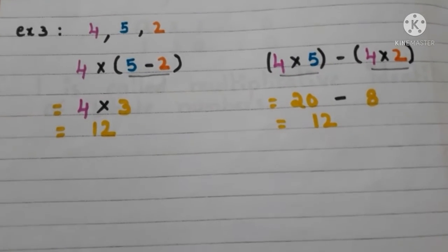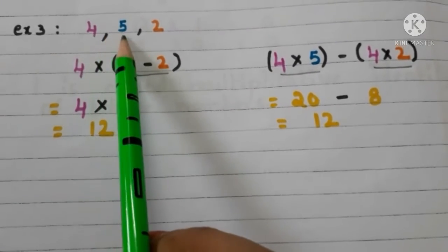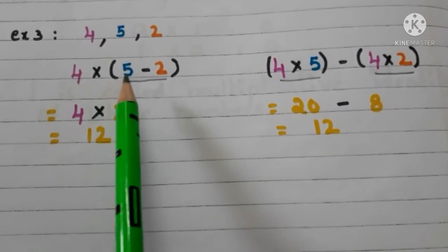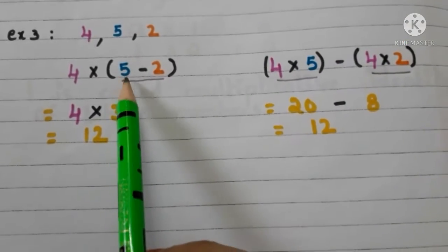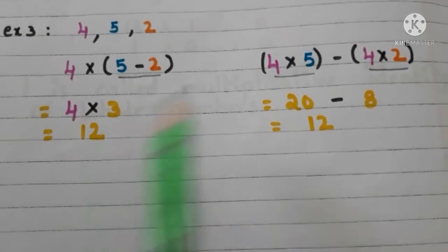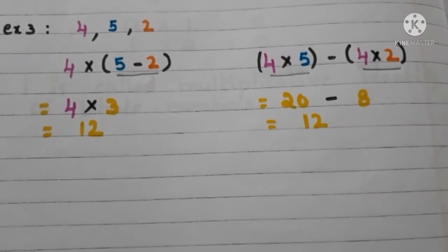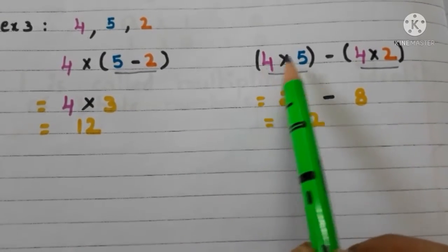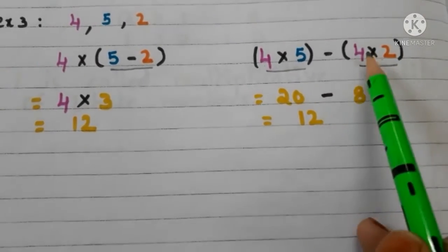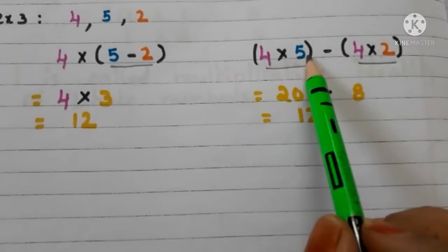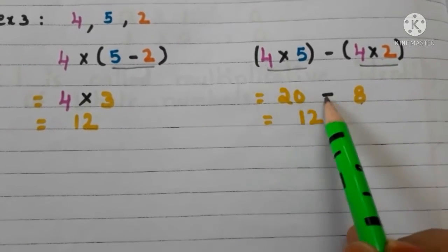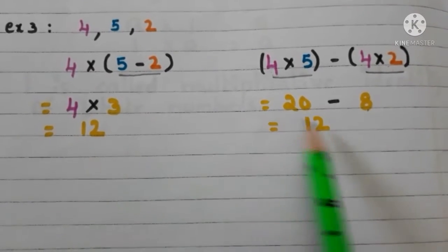Let us see another type of example. Take 3 whole numbers 4, 5 and 2. First, we take the product of 4 and difference of 5 and 2. 5 minus 2 is 3. Now, multiply with 4: 4 times 3 are 12. Now, let us solve this in another way. First, take the product of 4 and 5, then take the product of 4 and 2, finally take the difference of these 2. 4 times 5 are 20, 4 times 2 are 8. 20 minus 8 is 12. Here we get the same answers.